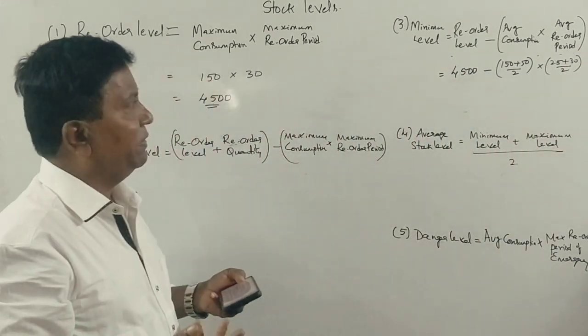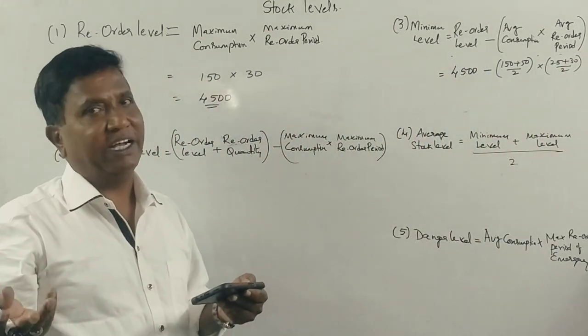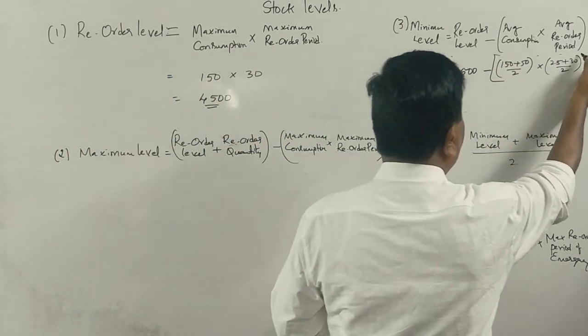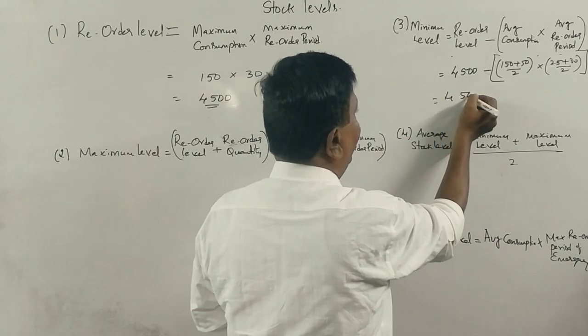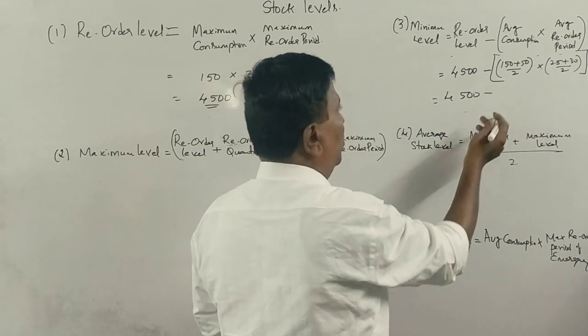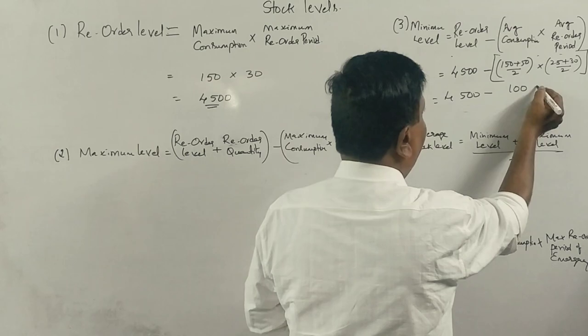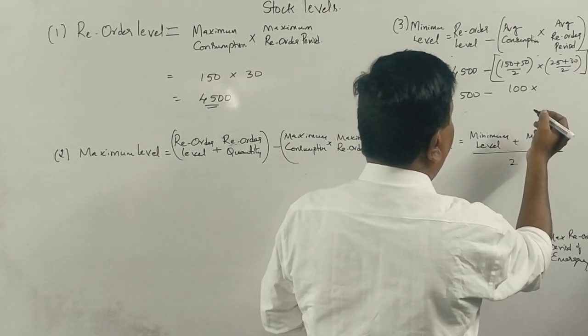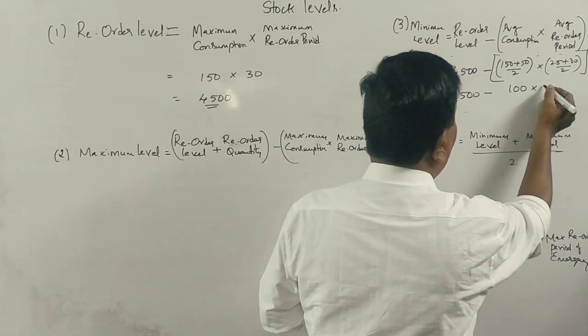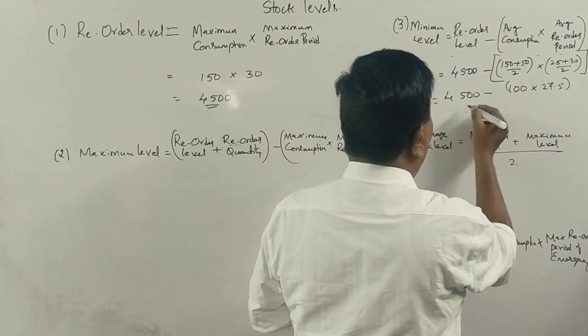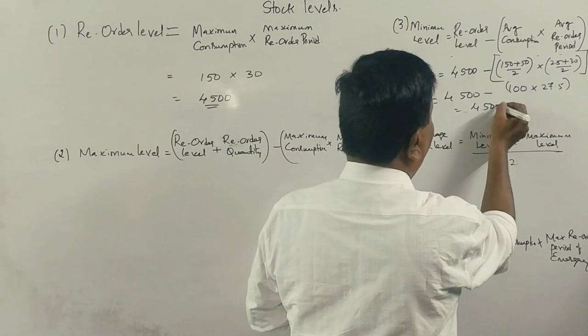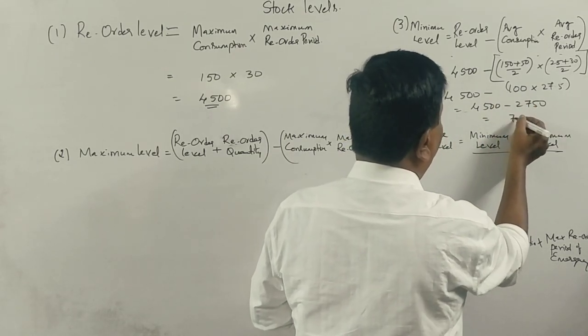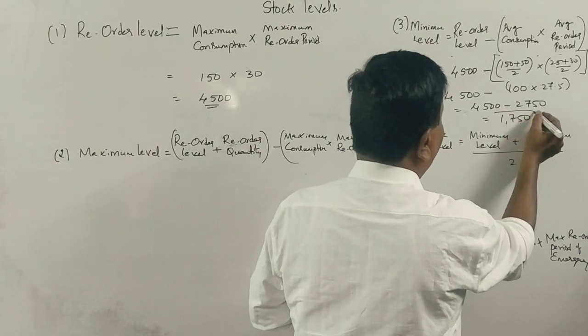Average means minimum plus maximum divided by 2, correct. So this is 4,500 minus... 200 divided by 100... into 55 divided by 2, 27.5. This is 4,500 minus 2,750, correct. The answer is 1,750.